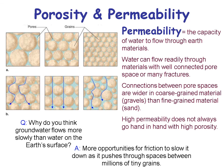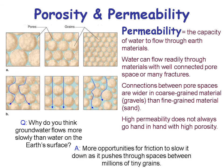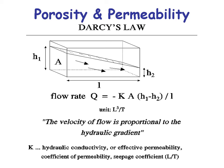Why does groundwater flow more slowly than water on the surface? Because of permeability — there's more friction with more grains, so water can't flow as quickly as through a river. The mathematical formula that describes flow rate and permeability is called Darcy's Law. The velocity of flow is proportional to the hydraulic gradient. K is the hydraulic conductivity or effective permeability — the coefficient of permeability. H1 is higher than H2, and water flows downhill, so the difference H1 minus H2 is part of the hydraulic gradient formula.